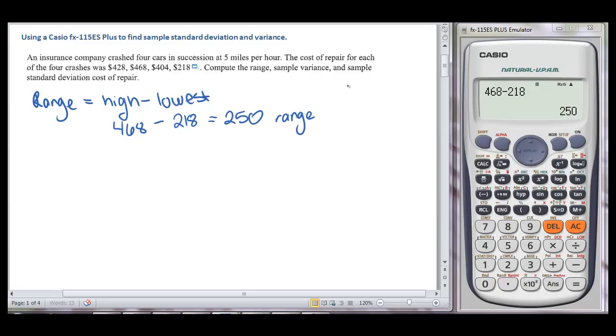Now let's go ahead and go into our sample variance and sample standard deviation. To do that, we need to get into statistics mode, so hit the mode button, and we see that stat is number three. So we're going to hit three, and we're just dealing with one variable. We have one list of information, so number one, and then we're going to enter our information.